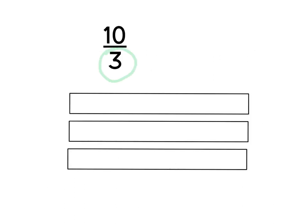The unit fraction is one-third, which lets me know that I need to partition each tape diagram into thirds, giving me three-thirds. When using decomposing to convert to a mixed number, we're going to use subtraction because we're actually pulling out all of the whole numbers.